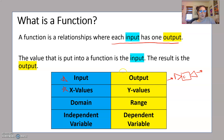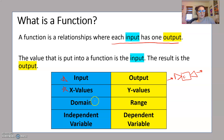Output is what comes out of a function, and that can also be the y values. It's also known as the range — the set of all y values — and you might also see it called the dependent variable, since it's dependent on whatever the independent variable is. We will mostly see output and y values.